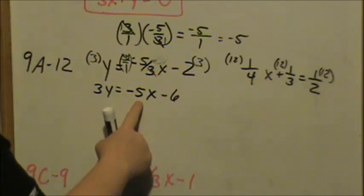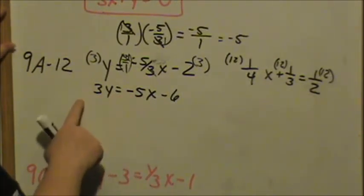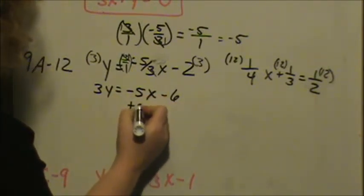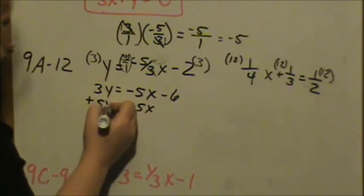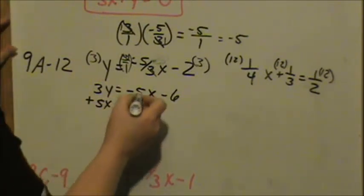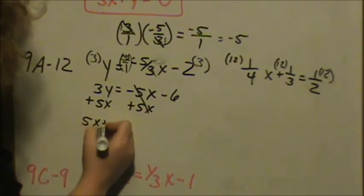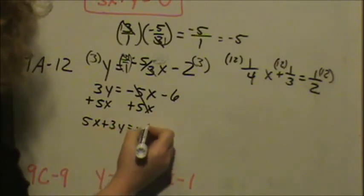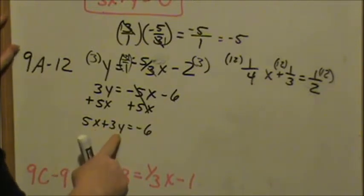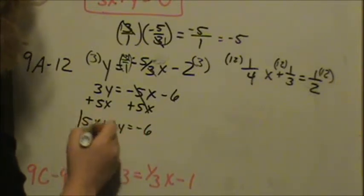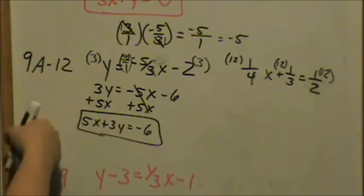We are still not in standard form. Standard form is x's and y's on the same side, so I need to move my x over here with my y. I'm subtracting 5x, so I need to add 5x to get rid of it. Whatever I do to that side I have to do to the other side. That cancels. I cannot add x's and y's together, so I have 5x plus 3y equals negative 6. Do not lose your negative. This is standard form: x's and y's on one side, whole numbers on the other side, no fractions. This is the same equation we started with, just in a different format.